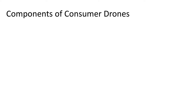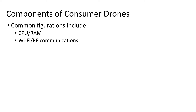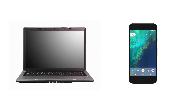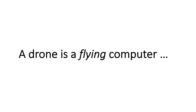To refresh our memories from the first video: most commercial off-the-shelf drones include CPU and RAM, Wi-Fi or radio frequency communications, a camera for video and photography, data storage, sensors—normally GPS—a battery, aeronautical hardware, and some means of controlling flight operations. But if we remove those last two components, we essentially have something that looks like a laptop, desktop computer, or smartphone. Essentially, a drone is a flying computer.